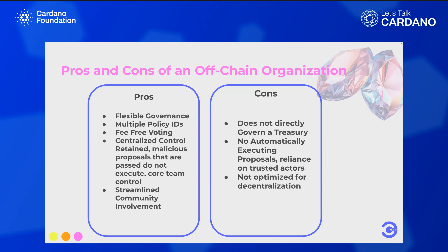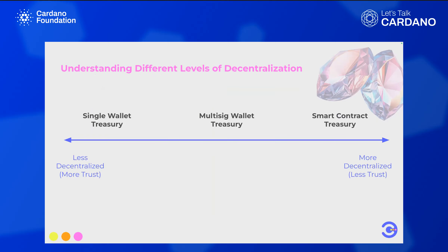Once you have a strong enough community and find product-market fit, only then can you actually transition to an on-chain treasury with automatically executing proposals. It is a process of becoming an actual decentralized autonomous organization.